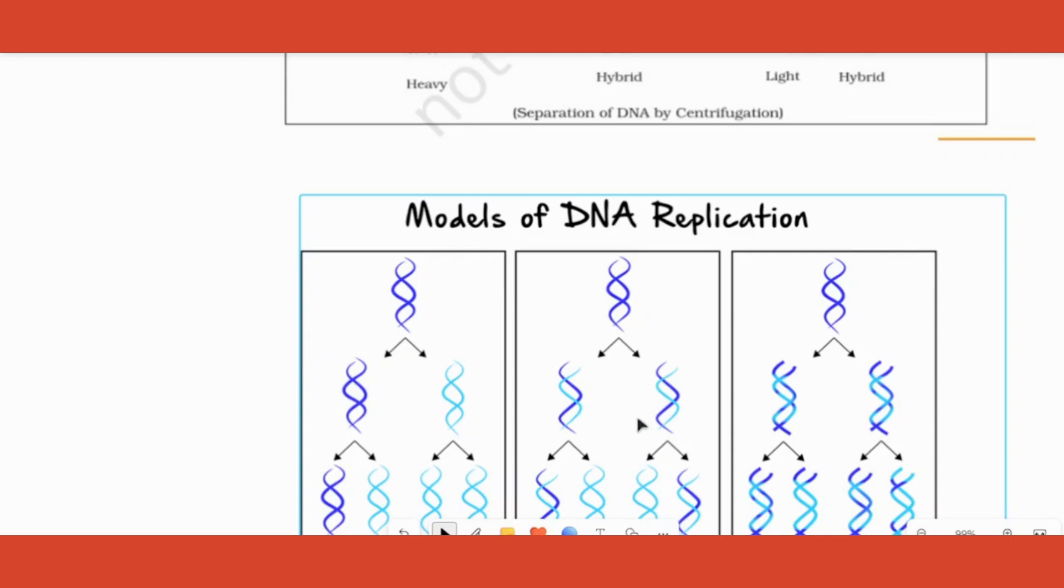We should also know the other models which were proposed by different people. The first model proposed was conservative model, second was semi-conservative, and the third one was dispersive.